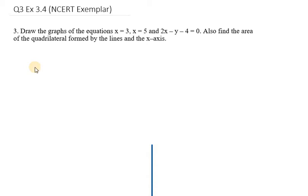Hello everyone, let's start with question number 3. It says, draw the graph of the equations x equals 3, x equals 5, and 2x minus y minus 4 equals 0. Also find the area of the quadrilateral formed by the lines and the x-axis.